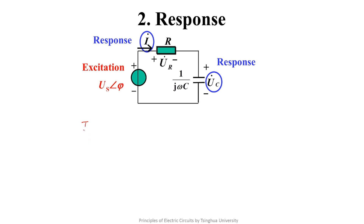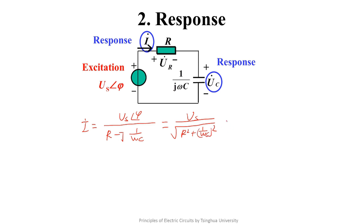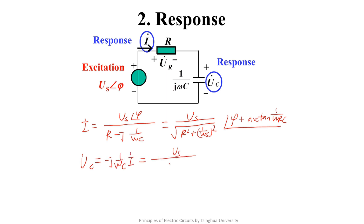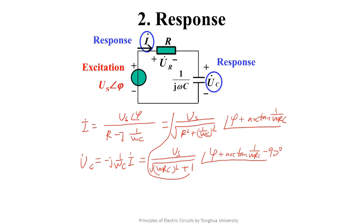Both are not hard to solve. You can find that the branch variables we are interested in — that is, the module and phase angle of the response — all change with frequency.